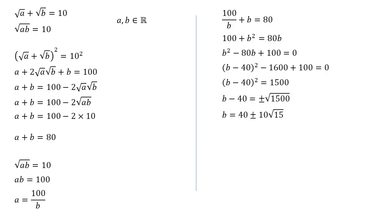Now we've got b, we can use our a plus b equals 80 to find a. So we know that a is equal to 80 minus b just by rearranging that equation. And we found b. So a is going to be equal to 80 minus 40 plus or minus 10 root 15.